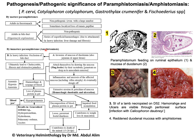The immature flukes or amphistomes are found in the small intestine, particularly the upper part. They attach themselves to the mucosa and feed on it, therefore they are called blood feeders or back feeders.